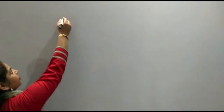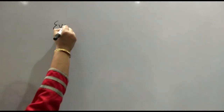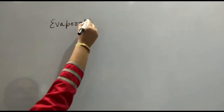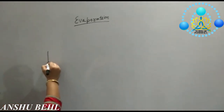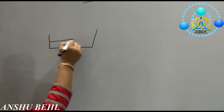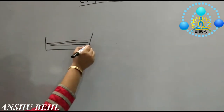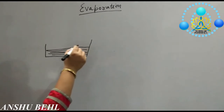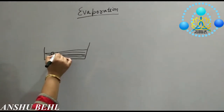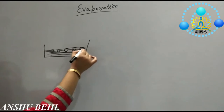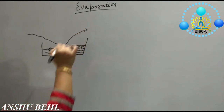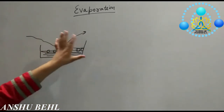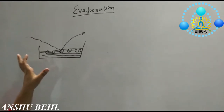Today we are going to start with the next topic, that is evaporation. First thing: what is evaporation and how it is different from boiling. Evaporation is a surface phenomenon in which water molecules from the surface evaporate out. If water is kept in any container, water molecules present on the surface are taken away when wind comes. This process is termed as evaporation.